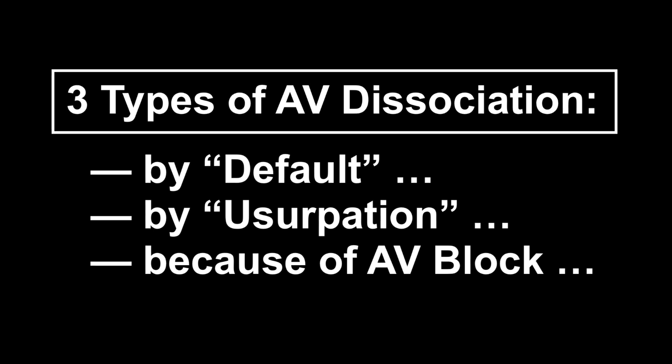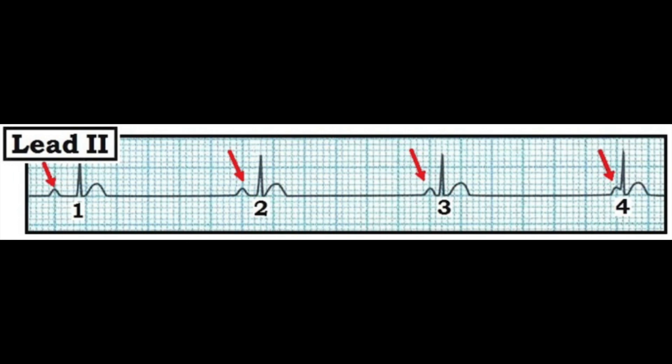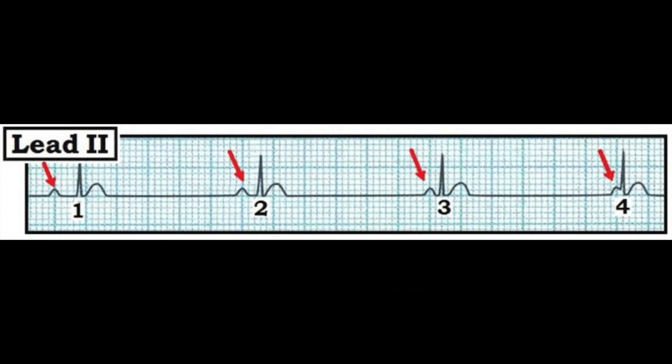There are three types of AV dissociation. First: AV dissociation by default. Because the sinus pacemaker — the SA node — slows down, the AV node may take over. This was a healthy individual put under anesthesia, which often slows the rate. The rate of the AV node is about 55; the sinus rate is about 50. What happened was sinus bradycardia, so a normal AV nodal escape pacemaker took over. This is AV dissociation by default. If you only showed me this rhythm, I would say there is no evidence of any AV block.